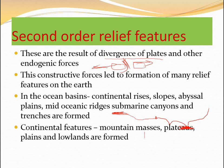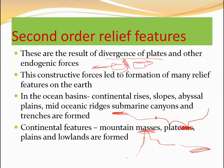As continental features, mountain masses, plateaus, plains, and lowlands are formed. Mountains are very high, followed by plateau regions, then plains, and lowlands. When we compare the height of these with sea level, the height varies, giving us different kinds of continental relief features.